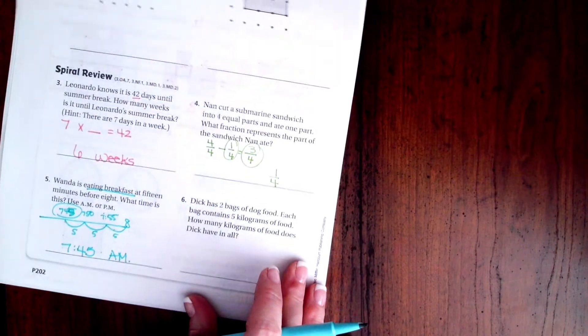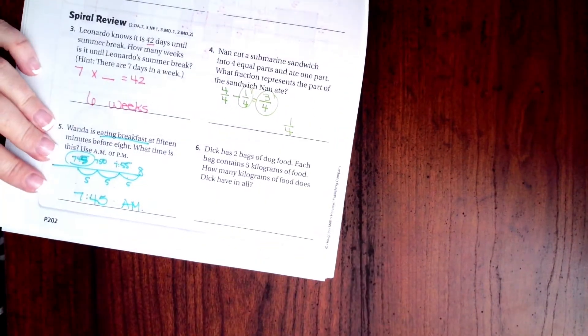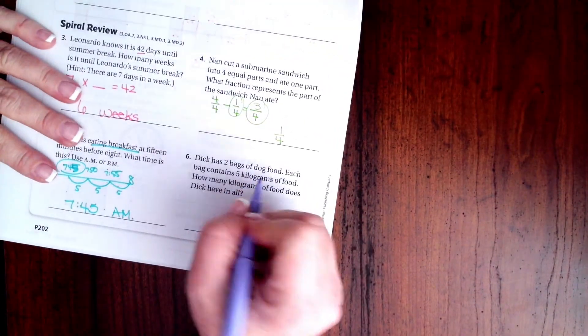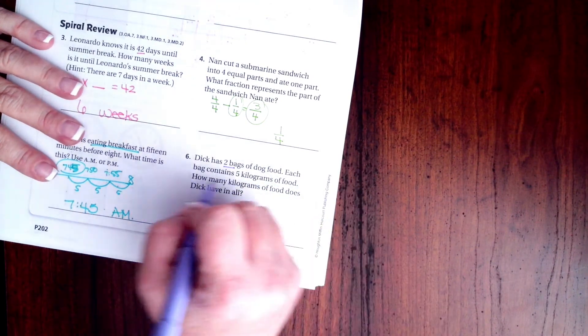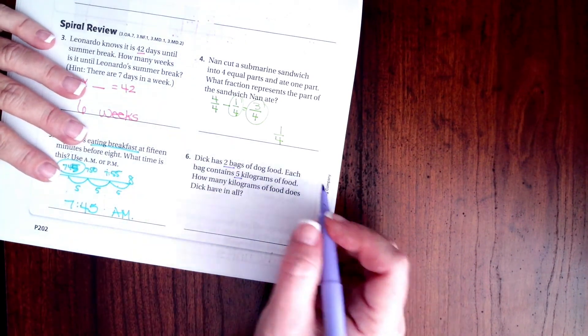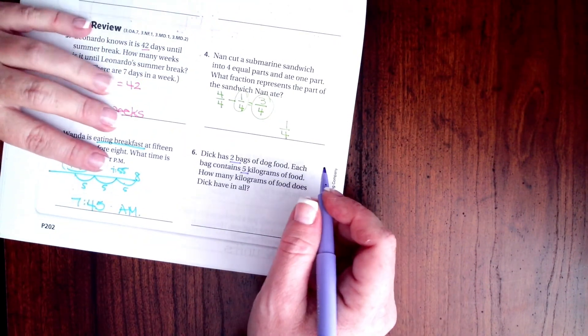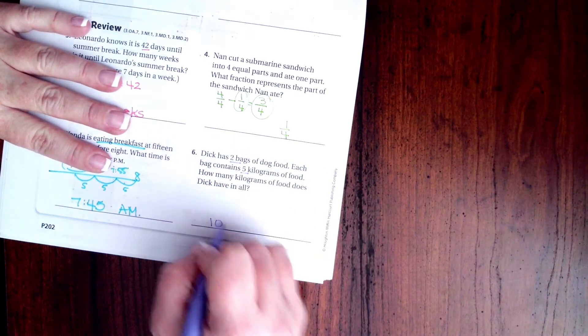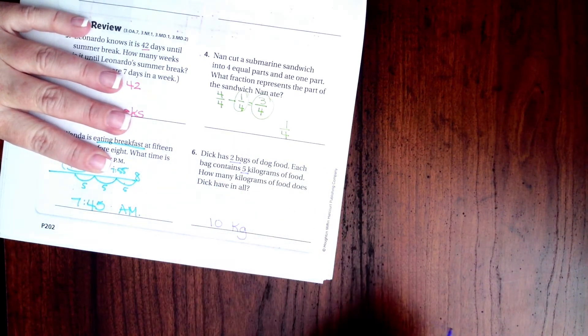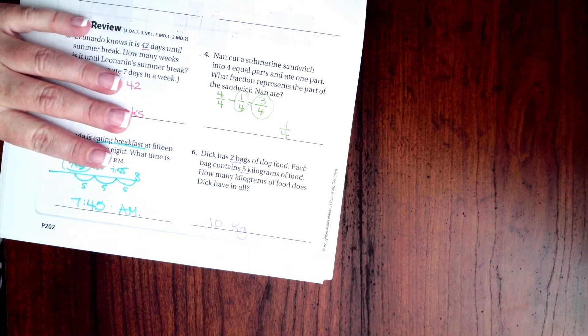Now, we are going to go to number 6. It says, Dick has 2 bags of dog food. Each bag contains 5 kilograms of dog food. How many kilograms of dog food does Dick have in all? Well, 2 times 5, well, that's just 10. Done.